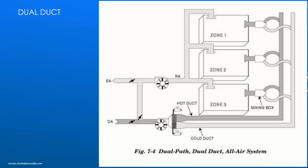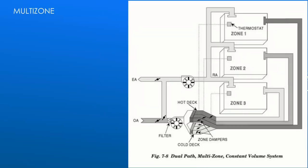Not shown are temperature sensors in each room or space which control the mixed air dampers for each of those spaces. The system type is expensive to install and costly to operate. Heating and cooling air and then mixing the two to obtain the desired temperature is not cost effective. This was a popular system type prior to about 1970 and was often used in school buildings.